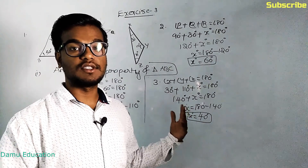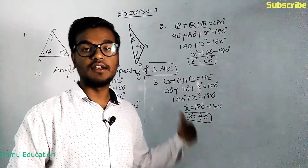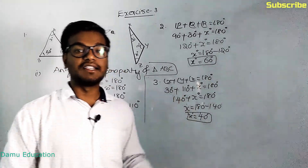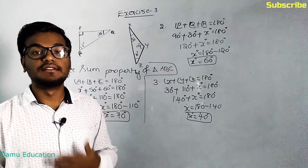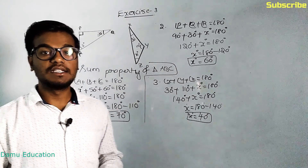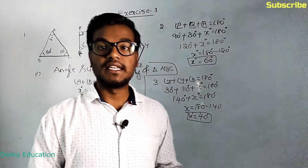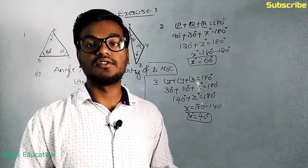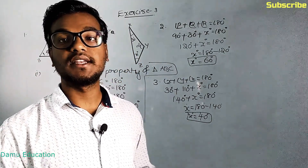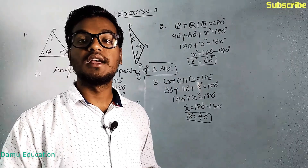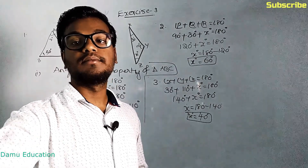If you want to check, substitute the X value back into the angle sum property of the triangle and you will get 180 degrees. Thanks for watching this video. You can watch more videos here on YouTube — please subscribe.